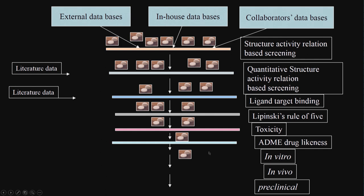Starting with millions of compounds, with structure-activity relationship I eliminate some; by binding I eliminate more; then I apply Lipinski's rule, toxicity rules, ADME rules, drug likeness rules, BBB, PGB, HERG, biotransformation, stability, protein and plasma binding. I come up with a small number — maybe hundreds — and do high throughput screening to get the best candidates, or hits. Then I may go to animal models and human trials. This is how we combine in silico techniques with in vitro, in vivo, and preclinical studies.